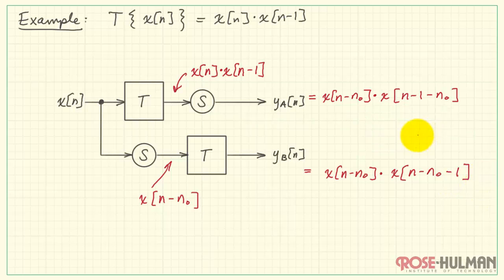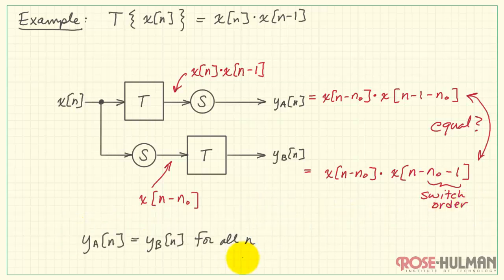Now let's compare these two results, YA and YB. Are they equal to each other? Well, clearly these are the same, and these are also the same if we simply swap the order here. That's a valid math operation. Therefore, we conclude that since Y of A is equal to Y of B for all time N, the system must be time invariant.